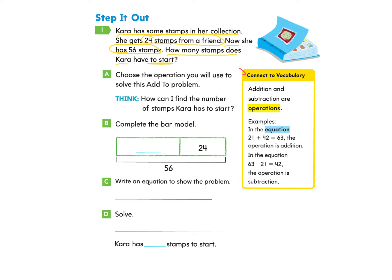Let's take a minute to look at our connective vocabulary. Addition and subtraction are operations. Here are some examples. In the equation 21 plus 42 equals 63, the operation is addition because we are adding two numbers together. In the equation 63 take away 21 equals 42, the operation is subtraction because we are taking away a number from another number.